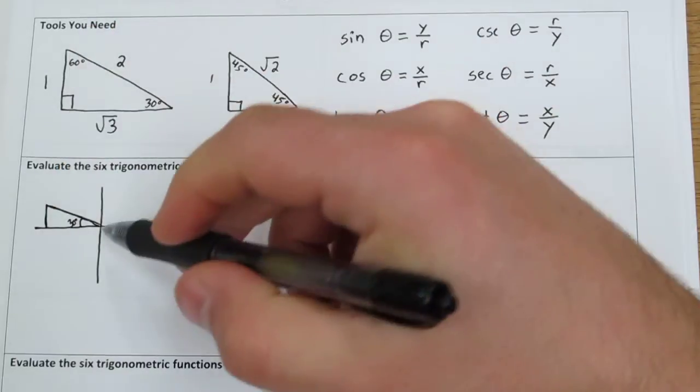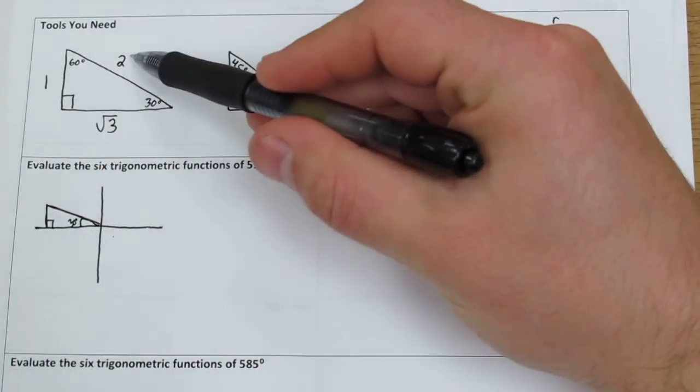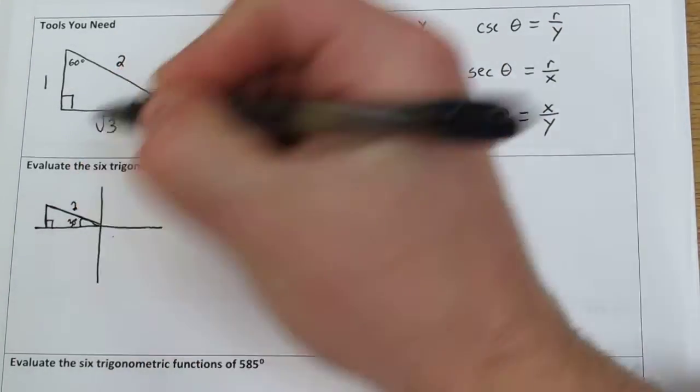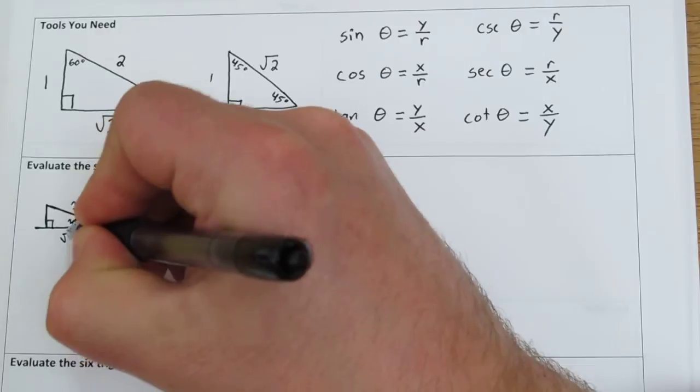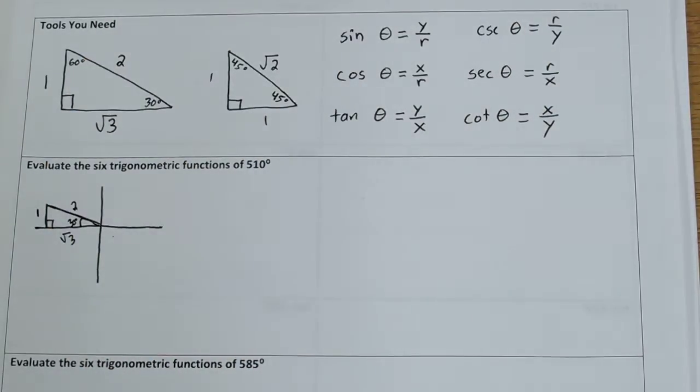Once we know that's 30 degrees, we can make a little triangle here. We can use our 30-60-90 triangle to label this side 2, this side rad 3, and this side 1. The whole key to doing these is to figure out what your x, y, and r are.